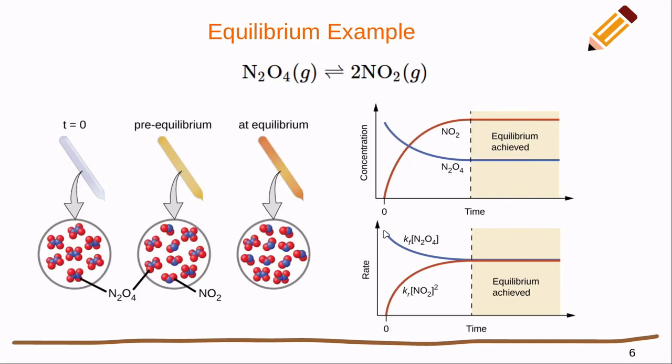If we were to graph their rates, we would see that at the same point where those concentrations are steady state, these two rates have converged into the same rate.